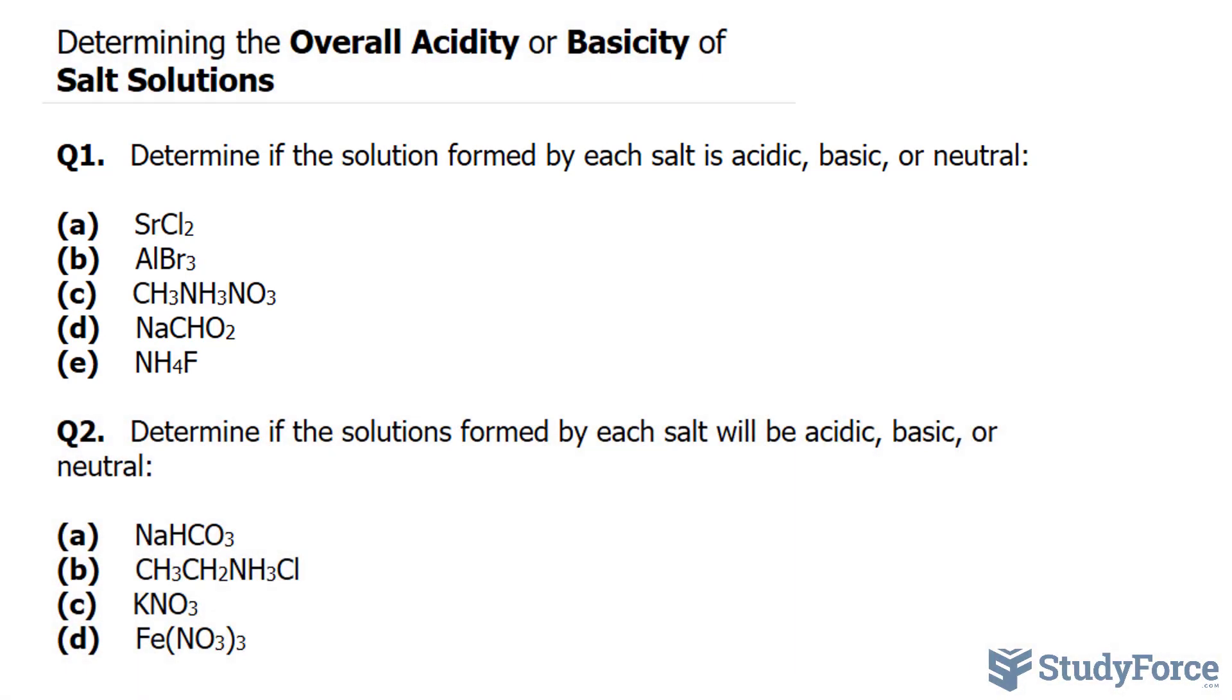So pretend that we have a solution containing Sr2+ ions and chlorine ions. They come together and they form this salt, SrCl2. So Sr2+ comes together with Cl-. Let's begin with strontium.